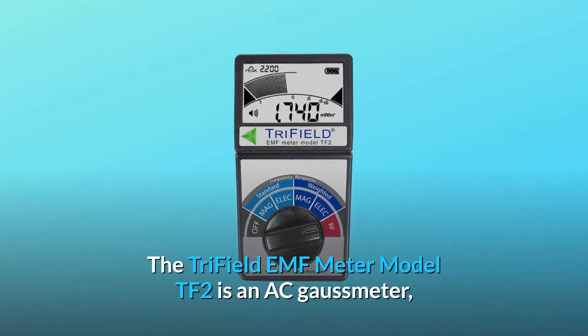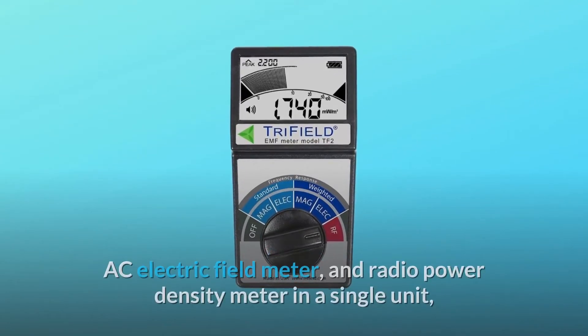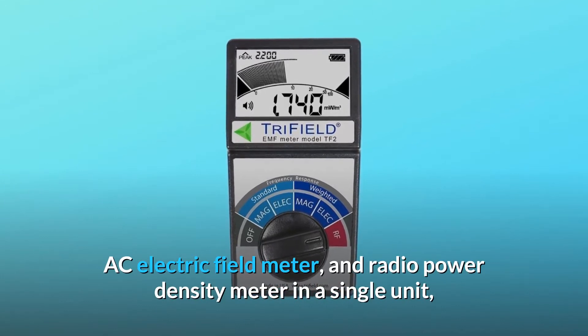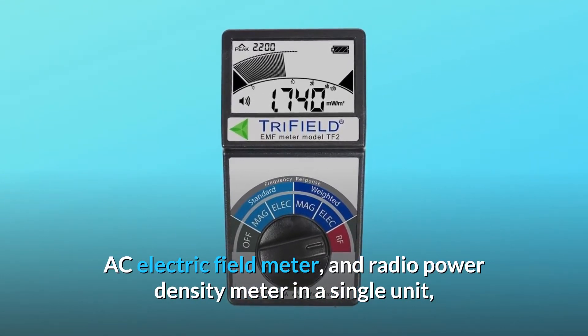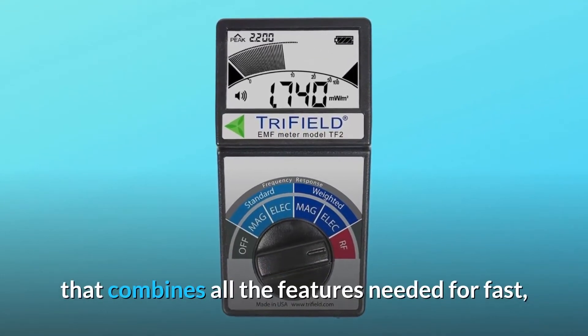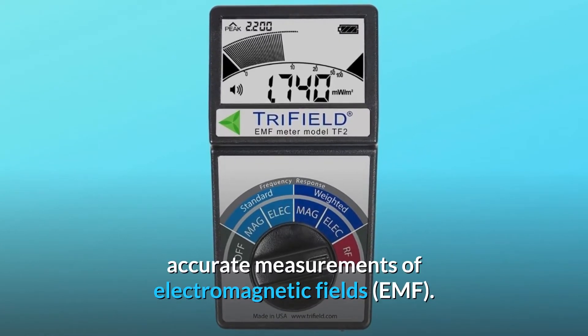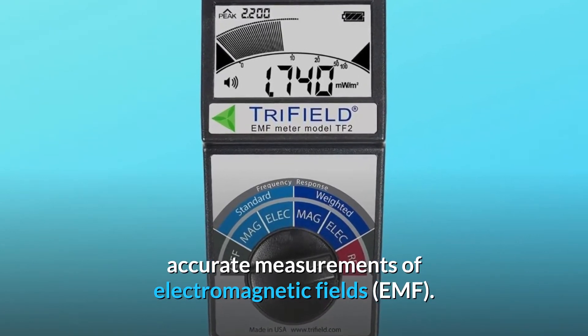The Trifield EMF meter model TF2 is an AC Gauss meter, AC electric field meter, and radio power density meter in a single unit that combines all the features needed for fast, accurate measurements of electromagnetic fields (EMF).